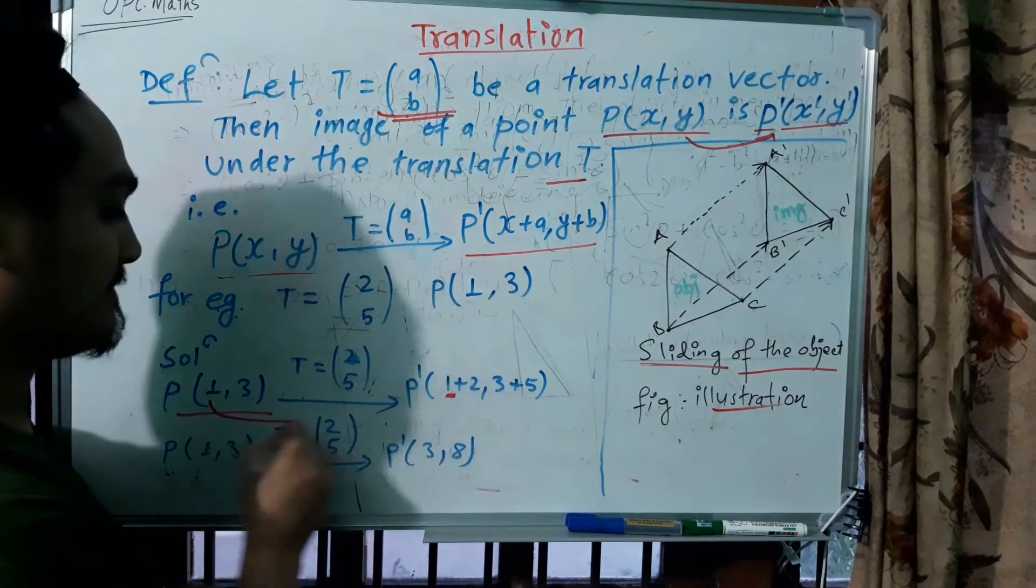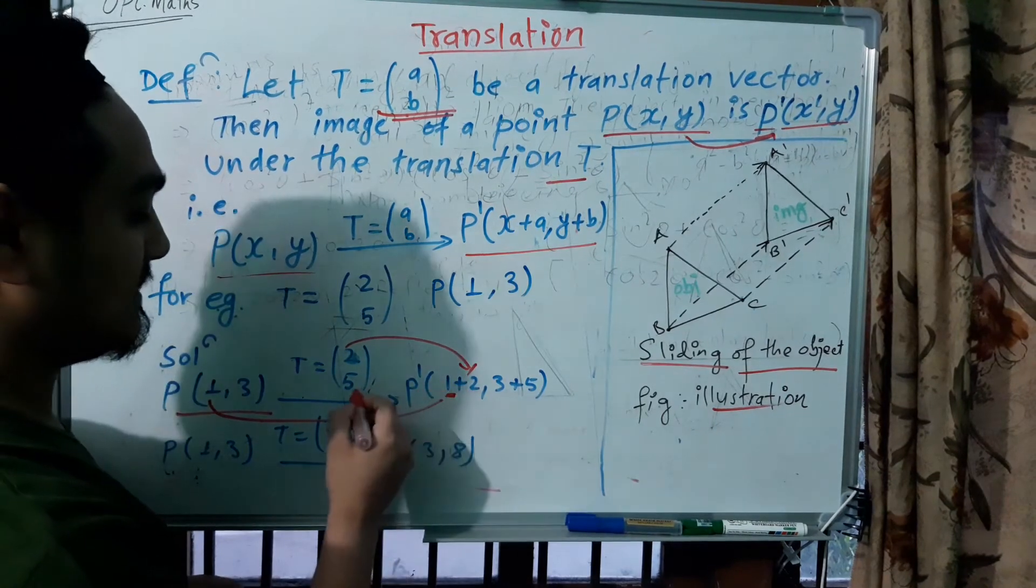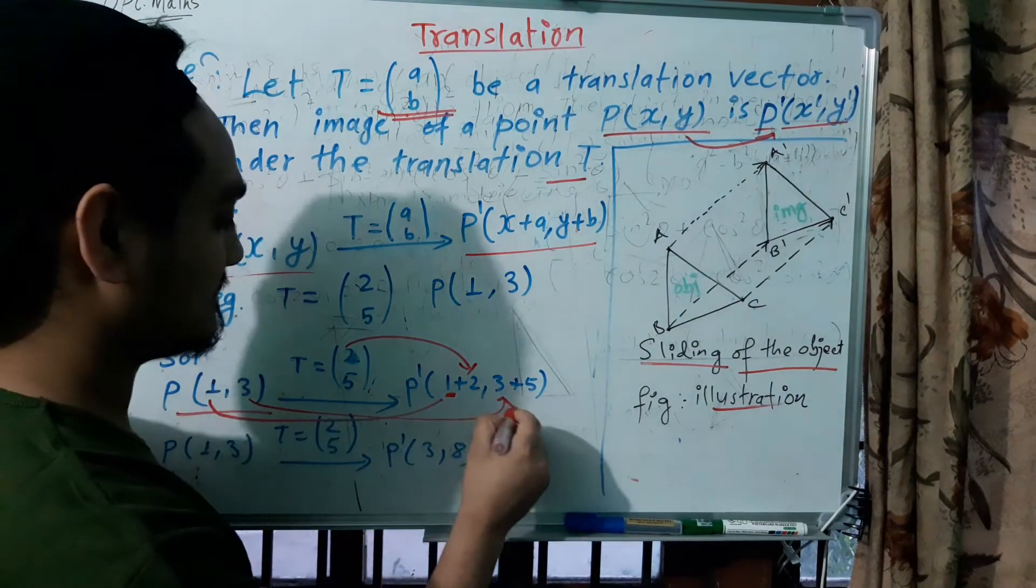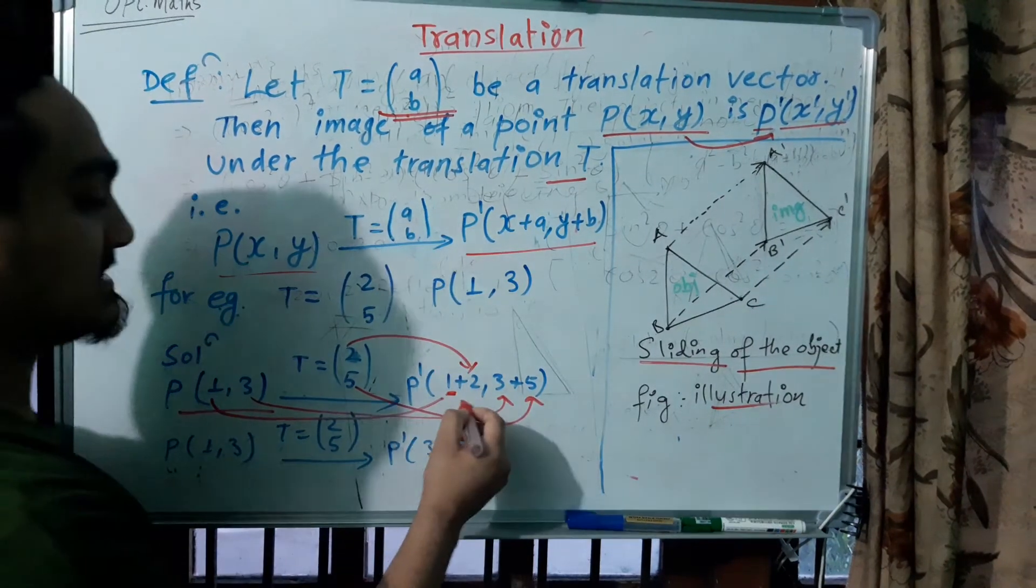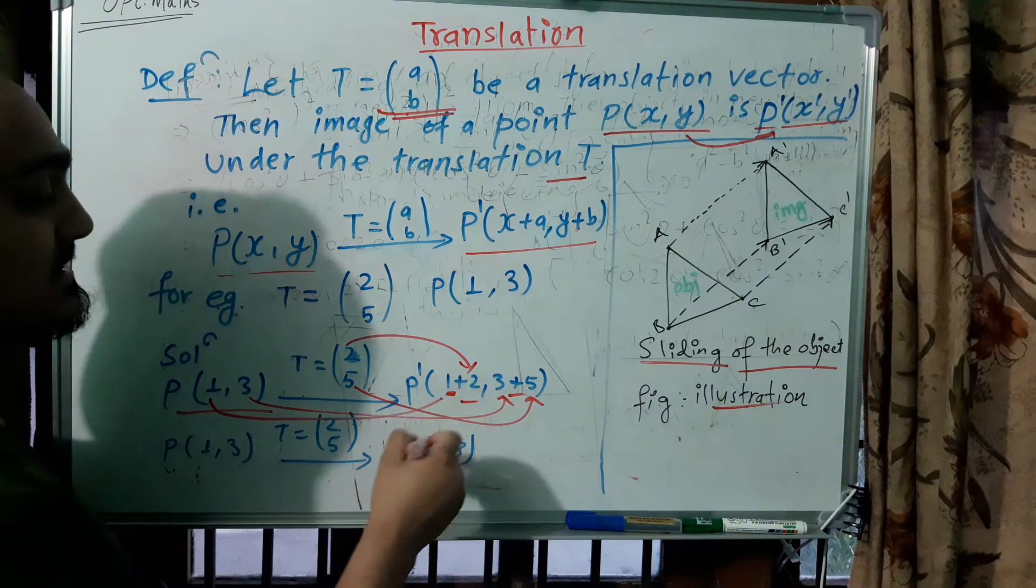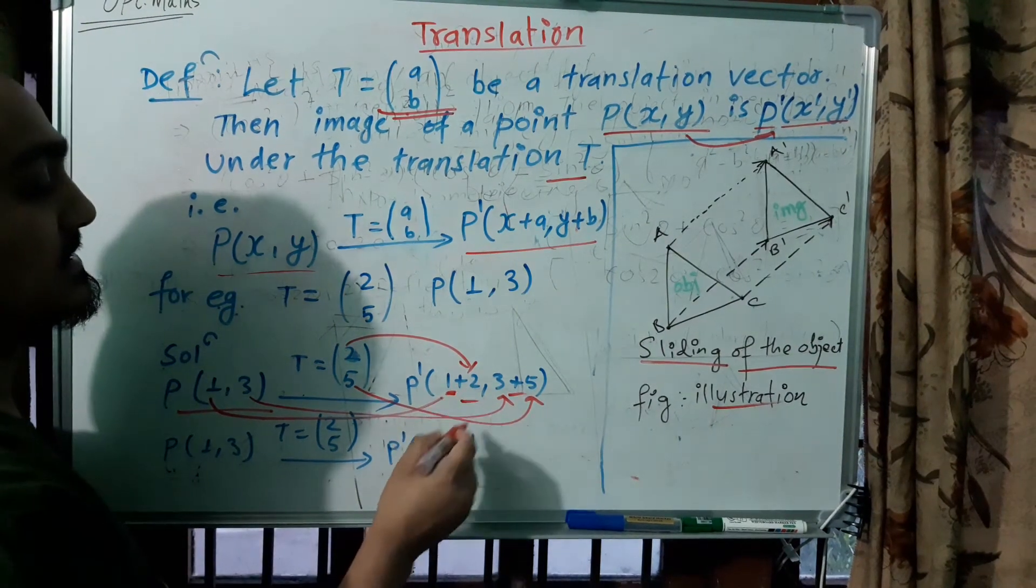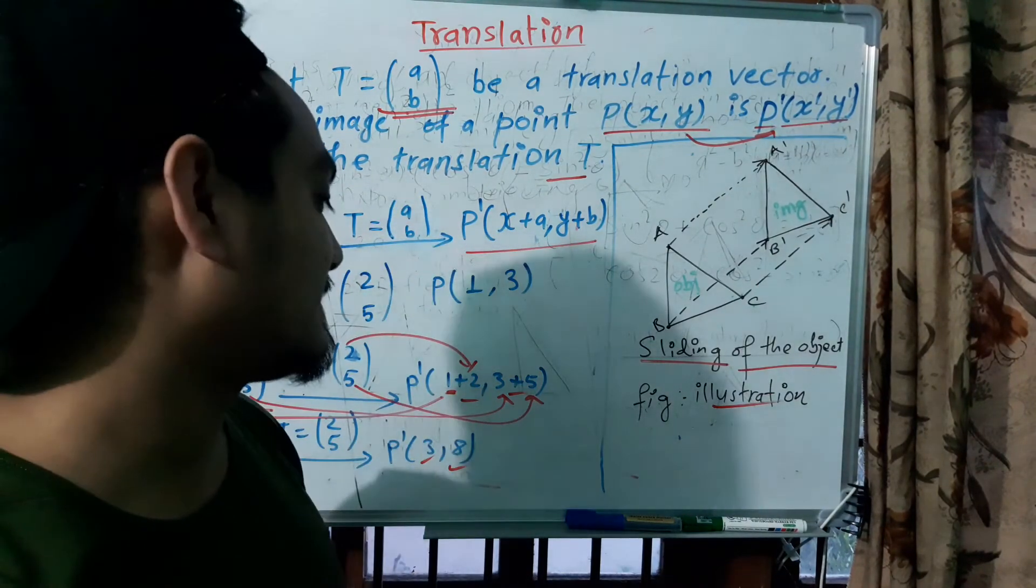x: one plus two equals three. Similarly, y: three plus two equals five. So (3,5).